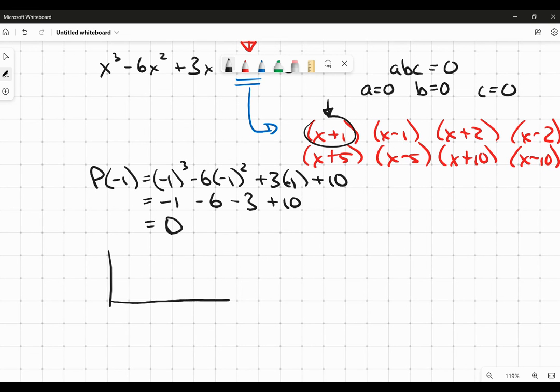So now what I'm going to do is I'm going to do some synthetic division. So I'm going to put my negative 1 outside here, 1, negative 6, 3, and 10. I'm going to bring down the 1. I'm going to multiply. And I'm going to add.